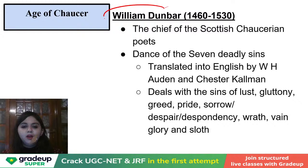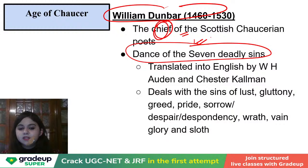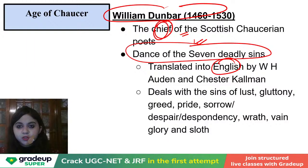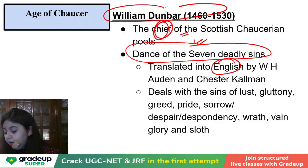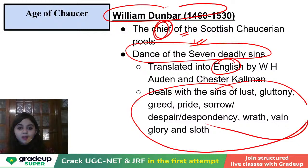William Dunbar is a very important writer, considered to be chief among the Scottish Chaucerians. He's writing The Dance of the Seven Deadly Sins, which was also a common mask performance during the Elizabethan period. It tells you about the seven deadly sins such as gluttony, greed, pride, and sorrow. A question that comes in exams is 'pick the odd one out' — so you must know about the seven deadly sins. These writers were imitating the master, but their writings were not of high quality — the works were actually lacking quality.